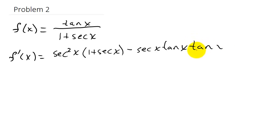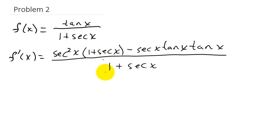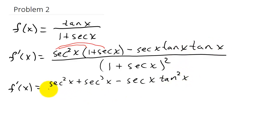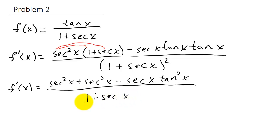All of that is over the denominator squared. Now let's simplify. I'm going to distribute the secant squared, so f prime of x equals secant squared x plus secant cubed x, minus secant x times tangent squared x, all over 1 plus secant x, squared.